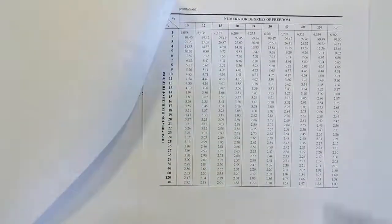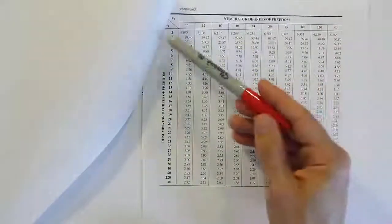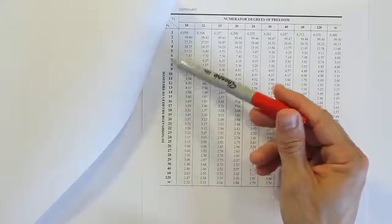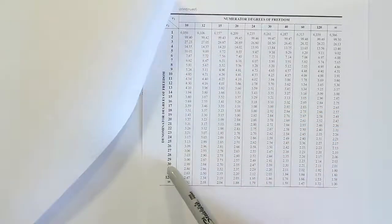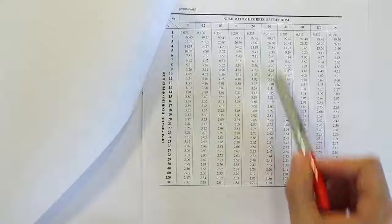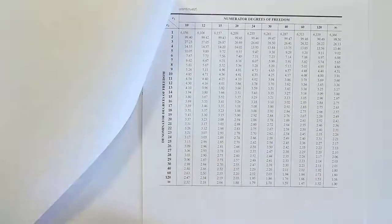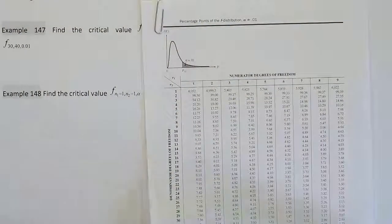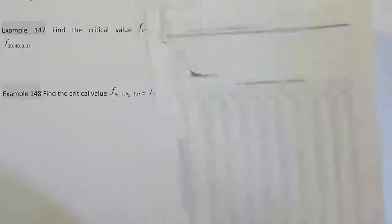So you'll see a 30 here, and then from there we go down on this column here for the denominator degrees of freedom. We go down until we see the 40 that we're looking for, and we go across and we'll find our answer. So that's how we get our critical values using these F-tables. So we'll zoom in and find that one next.